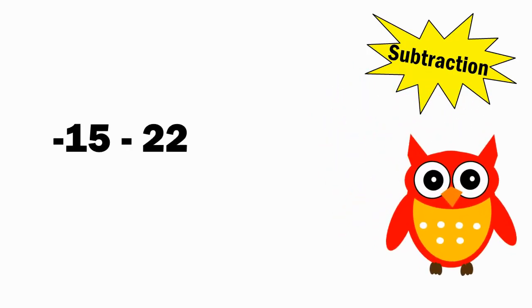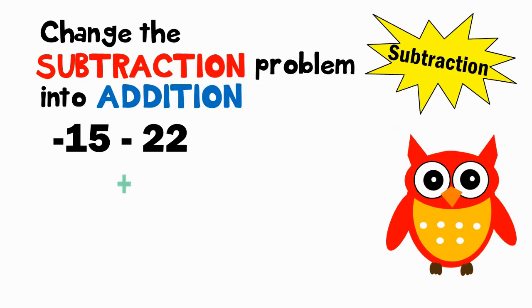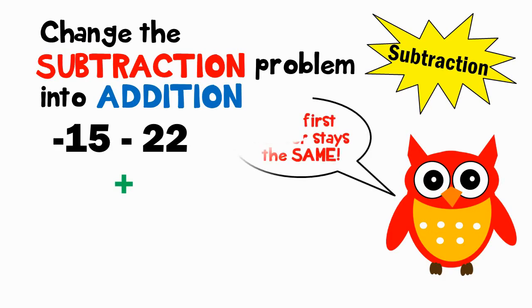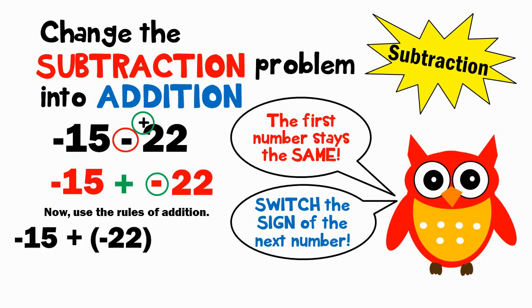Now for a subtracting integers rule. Negative 15 minus 22. Change the subtraction problem into addition. The first number stays the same. Switch the sign of the second number. Notice this minus sign is not the sign — it is the operation of subtraction. The 22 doesn't have any sign in front of it, so it is positive. The opposite of positive is negative. The new problem is negative 15 plus negative 22. Now use the rules of addition. Since you are now adding the same sign, which is negative, the answer is negative 37.